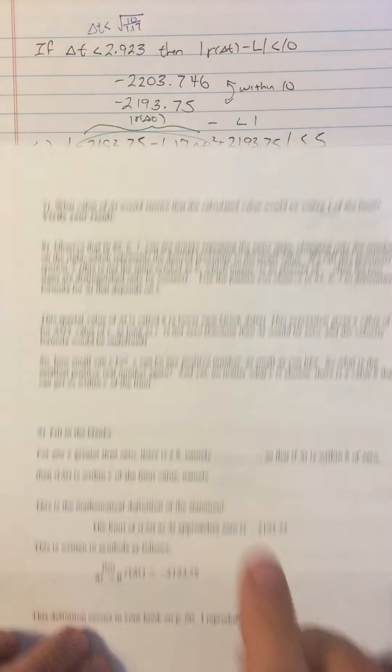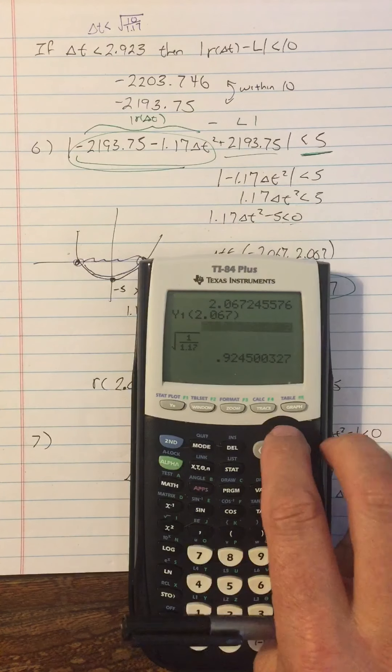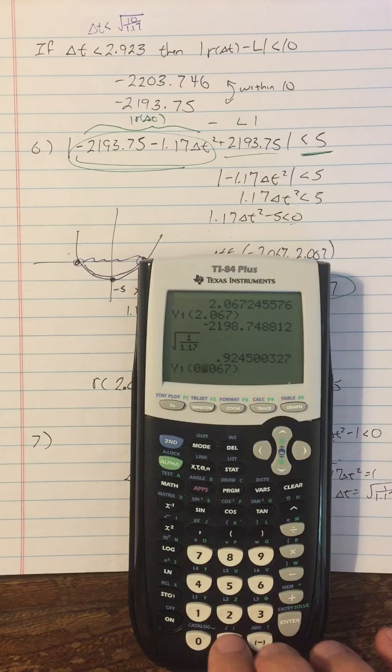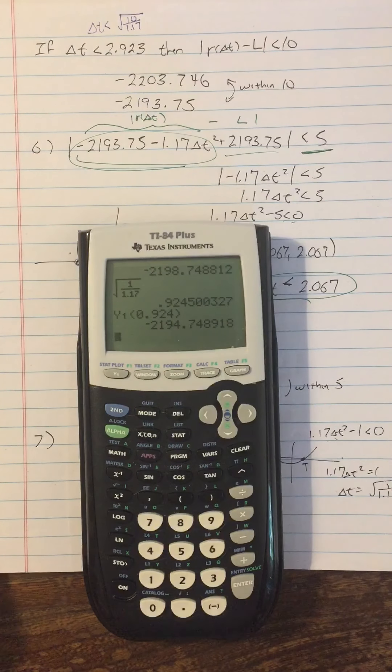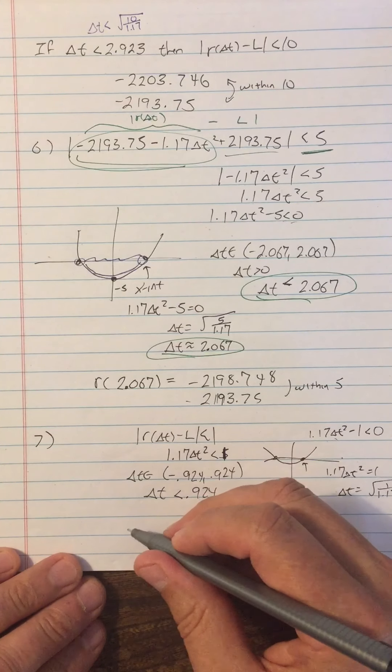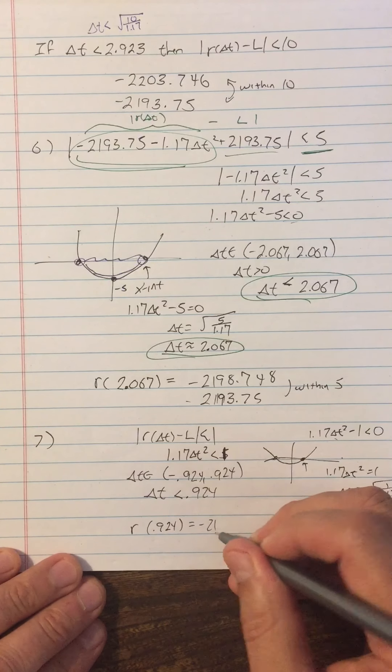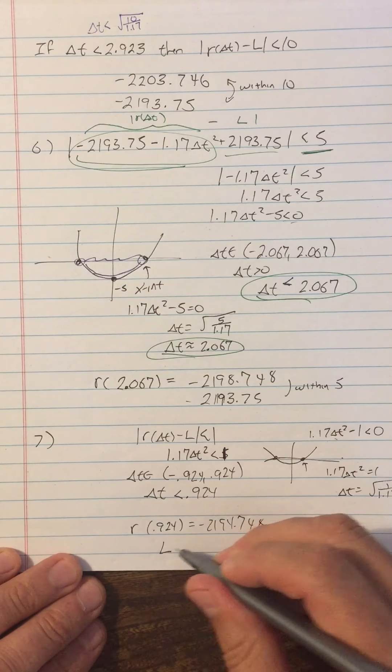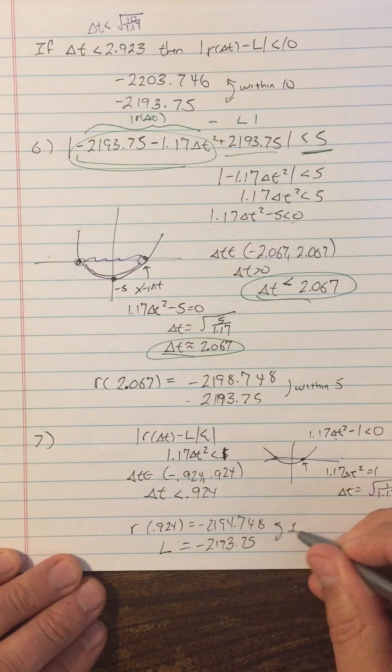And if I want to verify that result, all I have to do is do y1 of 0.924. All right. And my r of delta t is negative 2194.748. So r of 0.924 is equal to negative 2194.748. And we can see that l is negative 2193.75. So you can see that in fact I got within one of the limit.